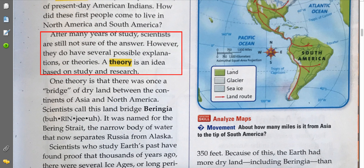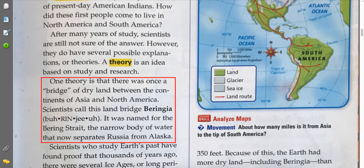After many years of study, scientists are still not sure of the answer. However, they do have several possible explanations or theories. A theory is an idea based on study and research. One theory is that there was once a bridge of dry land between the continents of Asia and North America. Scientists call this land bridge Beringia. It was named for the Bering Strait, the narrow body of water that now separates Russia from Alaska.